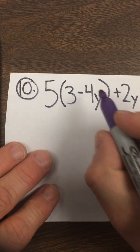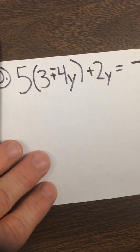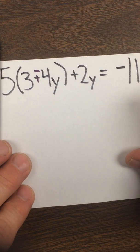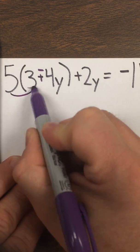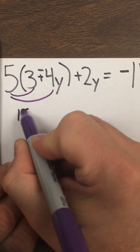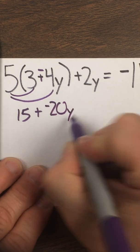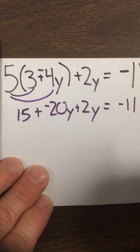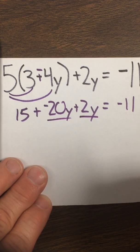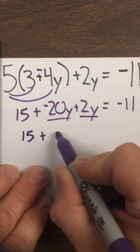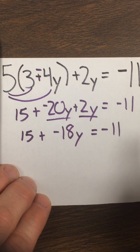Number 10. Leave change opposite. Distributive property — I want to get this distributed, so I have 5 times 3 which is 15, and 5 times negative 4y is negative 20y, plus 2y equals negative 11. Now I want to combine my like terms. Like terms have the same variable to the same power. I'm going to subtract them: I get 15 plus negative 18y equals negative 11. And now we're in a two-step equation, so now we can solve it.